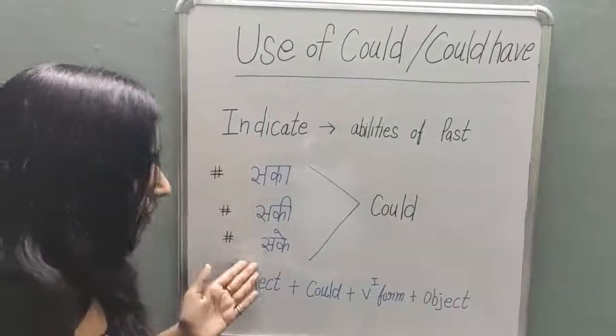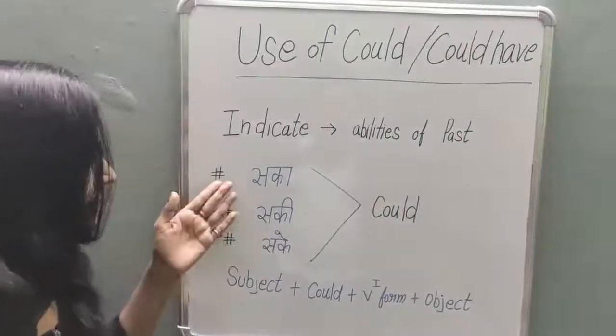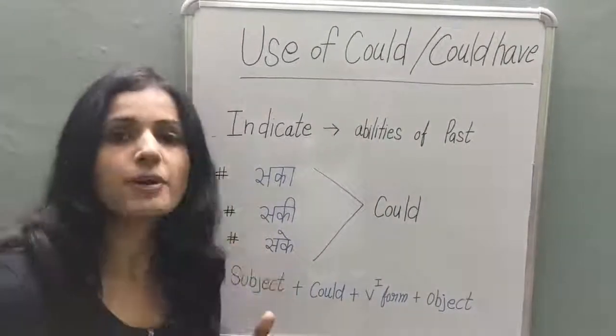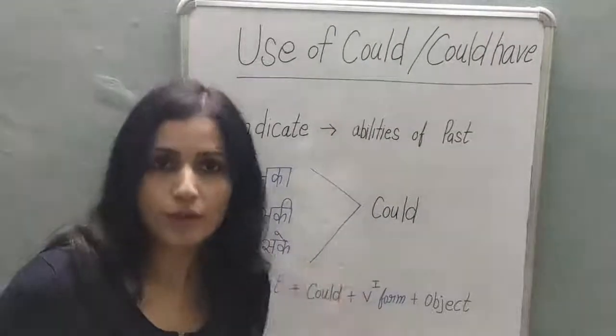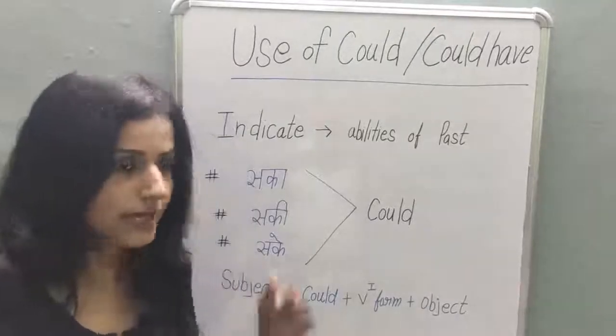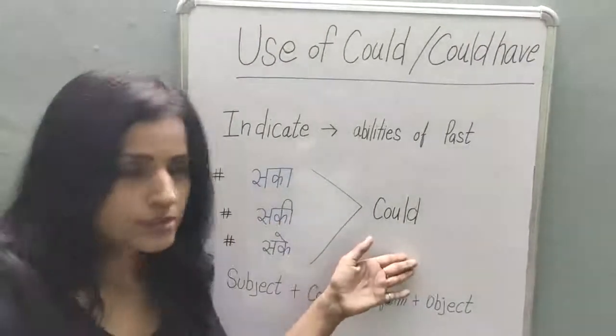How will it end in the Hindi version? It ends as 'Saka', 'Saki', 'Sake'. When it ends this way in Hindi, we use 'could'.